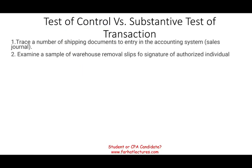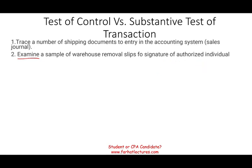The second example: examine a sample of warehouse removal slips for the signature of an authorized individual. When you hear 'examine,' there's a good chance it's a test of control — and this is a test of control. You're examining whether the authorized individual actually signed the removal slip. We're trying to find out: did this actually happen? The audit objective being satisfied is occurrence.